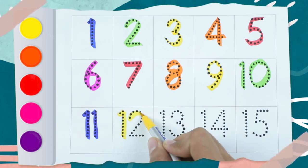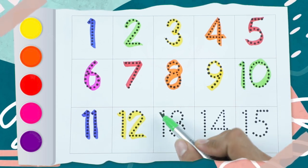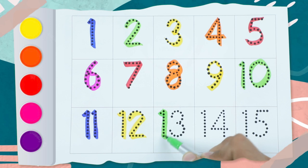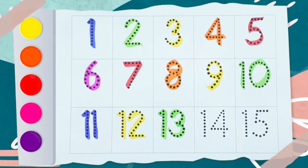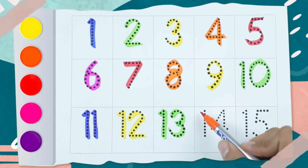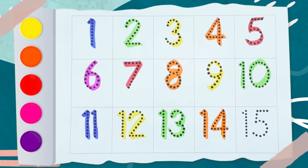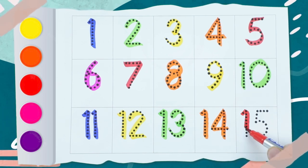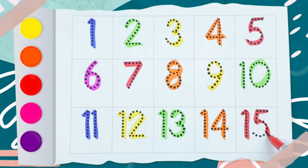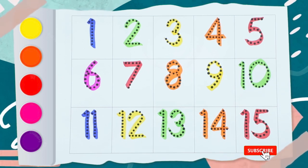Number 11 is yellow color. Number 12 is yellow color. Number 13 is green color. Number 14 is orange color. And number 15 is red color. Thank you so much!